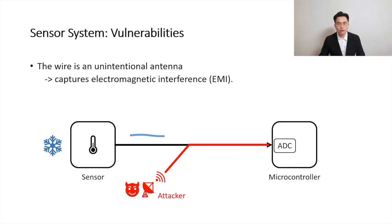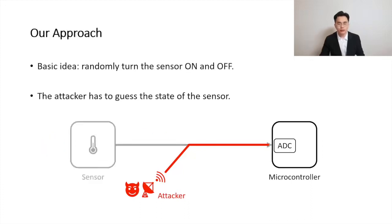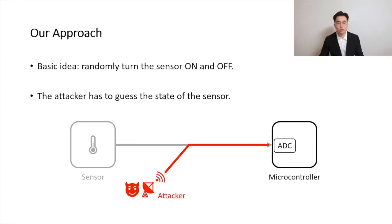Therefore, it is essential for the system to have the capability of detecting attacks. The basic idea of detecting attacks is like this: when the sensor is off, the microcontroller should not receive any sensor measurement. However, if an attack happens, the microcontroller will receive a measurement, and this indicates an attack. So if we randomly turn the sensor on and off, the attacker is forced to guess the state of the sensor. In order to bypass the detection, the attacker must not affect the sensor output when the sensor is off. If the attacker makes a wrong guess, she will be detected soon.